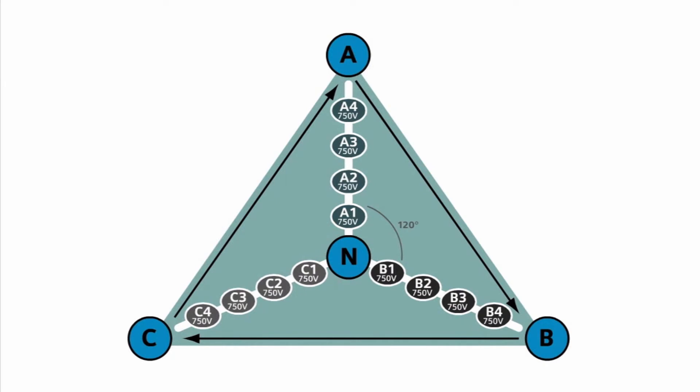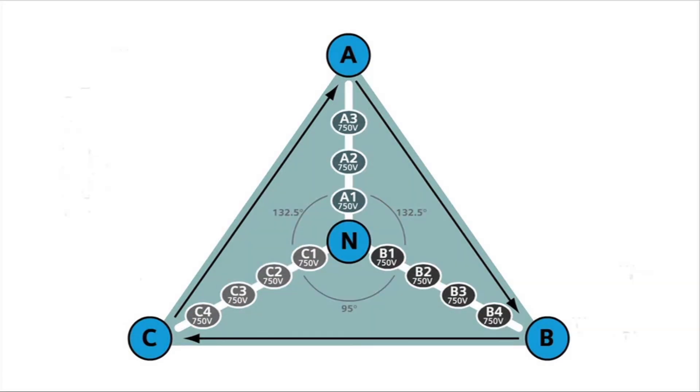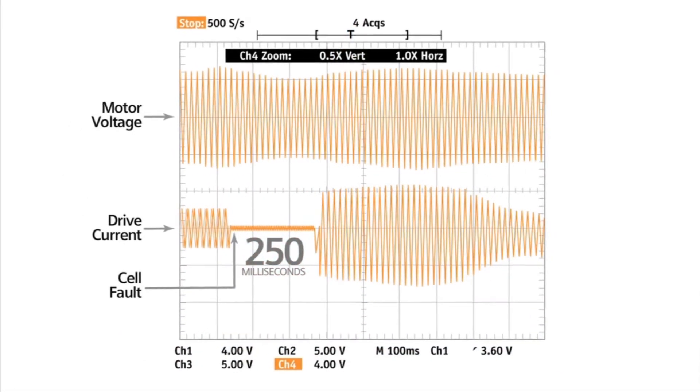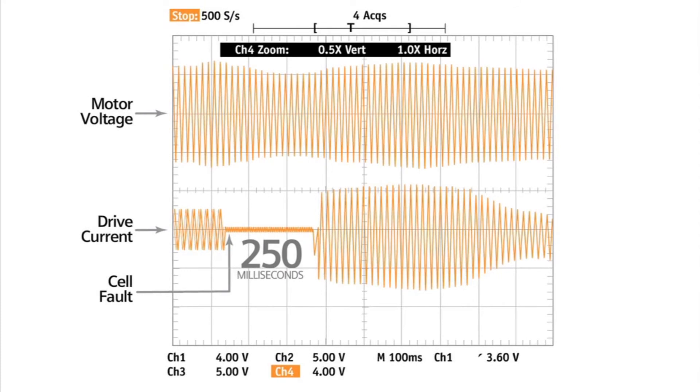Following cell bypass, the other cells remain active. The neutral point shifts in order to produce a balanced output voltage to the motor. With one cell in bypass, the drive still produces sufficient voltage for the process to continue uninterrupted. The quality of the voltage waveform remains virtually unchanged.